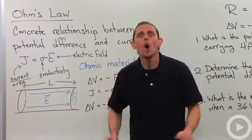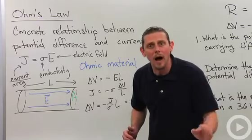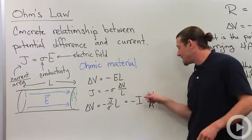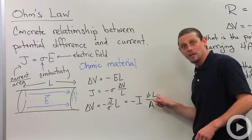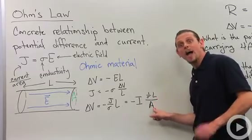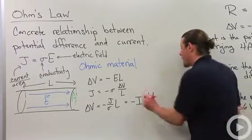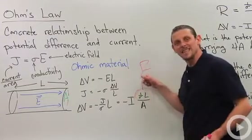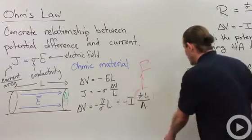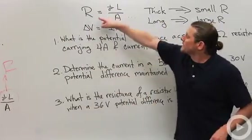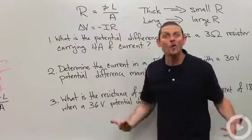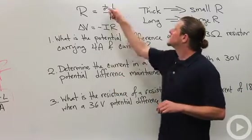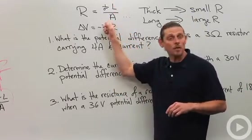Remember that the current density is current divided by area. So if I plug that in, I get delta V equals minus current times one over sigma times the length of the wire divided by the cross-sectional area. That looks annoying, so we're going to give it a name — we'll call it R, the resistance. The resistance is equal to one over sigma — one over the conductivity, which is called the resistivity — times the length of the wire divided by the cross-sectional area.